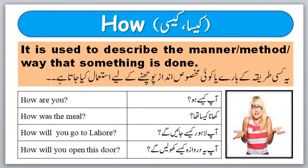Our last word is 'how,' जिसके मीनिंग है कैसा या कैसी. It is used to describe the manner, method or way that something is done. यानि जब हम किसी manner के बारे में, किसी method के बारे में, किसी अंदाज़ के बारे में बात करने जा रहे हैं तो हम question के शुरू में word 'how' इस्तेमाल करते हैं. For example: How are you? आप कैसे हो? How was the meal? खाना कैसा था? How will you go to Lahore? आप Lahore कैसे जाएंगे? How will you open this door? आप ये दरवाज़ा कैसे खोलेंगे?